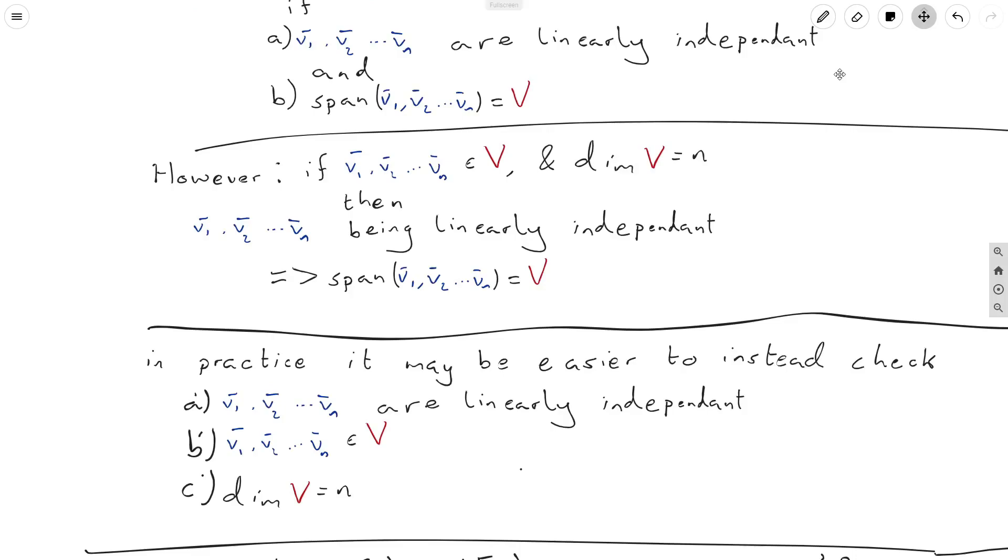That could be a second condition, and then we could just check that the vectors are linearly independent, and then we'll automatically have the span. So instead of checking these two conditions up here, a and b, we could instead check conditions a prime, b prime, and c prime. And these three conditions are actually quite easy to check.